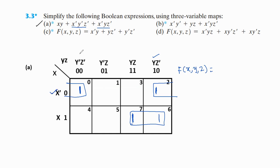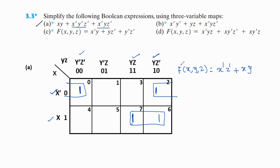For the second group, it lies in the second row and these two columns. This is x, and these two columns mean y is common. Z should be eliminated because z is available in both normal and complement form — z plus z' equals 1. So the simplified expression for the first expression is x'z' + xy.